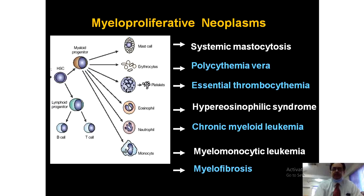In the genesis of lymphoproliferative and myeloproliferative disorders, the first hematopoietic stem cell divides into two series. The first is the lymphoid progenitor cell, which produces lymphoproliferative disorders. The second is the myeloid progenitor cell, which further divides into about six cell types including mast cells, erythrocytes, platelets, eosinophils, neutrophils, and monocytes. All these cells can produce malignancies.